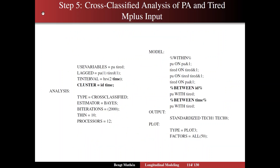On slide 114, you have this step five cross-classified analysis of PA and tired. Here's where new things come up. You have the T-interval naming of the analysis variable time, which then also plays the role of the second cluster level. You have ID and time. You use type equals cross-classified, and you may want 2,000 iterations at the very least, and thinning. If you can, processes equal 12, which makes it a little bit faster than eight processors on my computer, but if not, eight is fine.